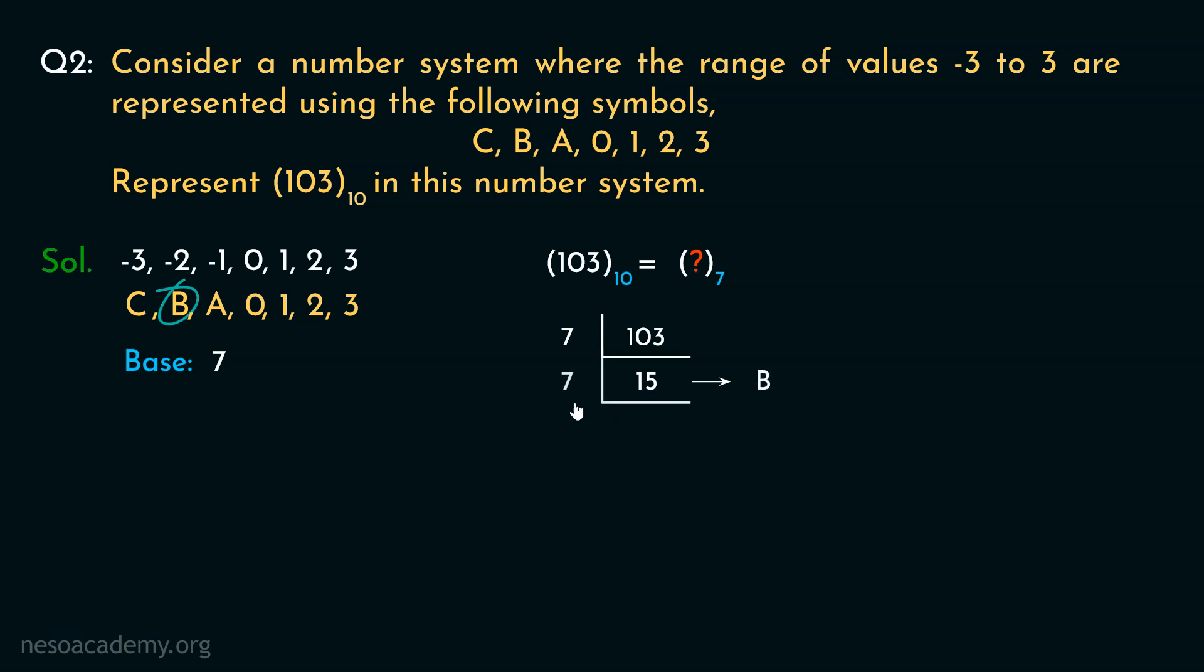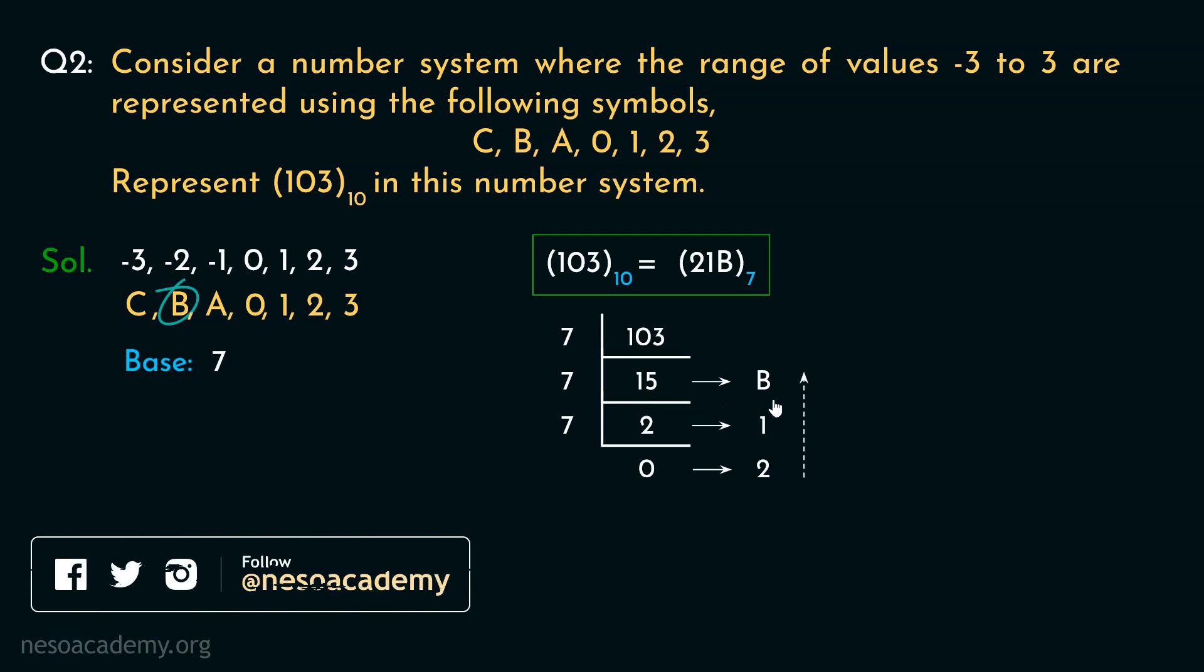Now 15 by 7 will give us the quotient 2 along with the remainder 1 because 2 times 7 is 14. So the remainder is supposed to be 1 only. Now 2 by 7 will produce the quotient 0 and the remainder will be 2. Now if we record the remainders in reverse, the representation of 103 in this number system becomes 21b. So while solving this, the only trick was to choose the quotient in such a way that the produced remainder is also covered by the symbol of the number system.